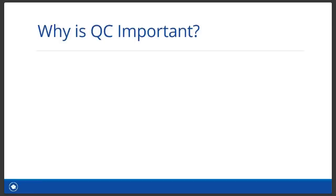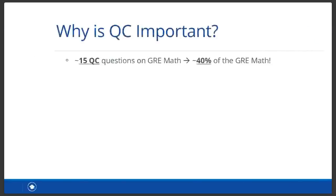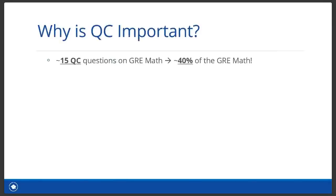Now that you know a bit about me, let's talk about quantitative comparison. So why is QC important after all? Well, the GRE math section has around 15 quantitative comparison questions. And since the entire GRE math section has only 40 questions, QC is nearly 40% of GRE math. This means that if you do better on QC, you can significantly improve your GRE math score. In fact, we've seen students increasing their GRE score by 4 to 8 points after conquering QC. This is huge.